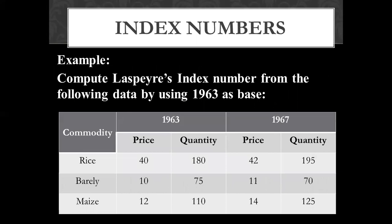After that, we have an example. We have a question where you have to compute Laspeyre's index number. In this question, you have to compute the index number. We have to solve it where the price and quantity will be the base-year price and the base-year quantity. The base-year price, which we have in the 1960s, will be the price column P-naught, and the quantity column will be Q-naught.